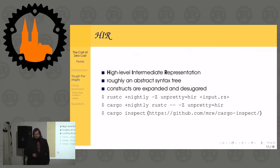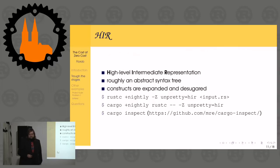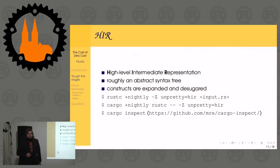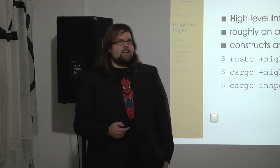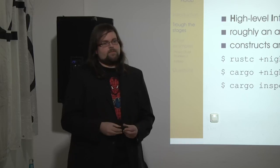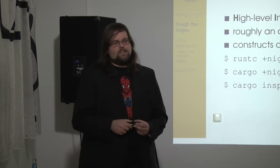Getting HIR is similar to the above - only works on nightly. Use `-Z unpretty=hir`. There's also cargo-inspect by Matthias Endler, introduced at FOSDEM, which formats the code and prints it with a color scheme in a less-like view. He has a FOSDEM recording on a very similar topic with more motivation for looking at low-level stuff, while this talk goes more into the nitty-gritty.